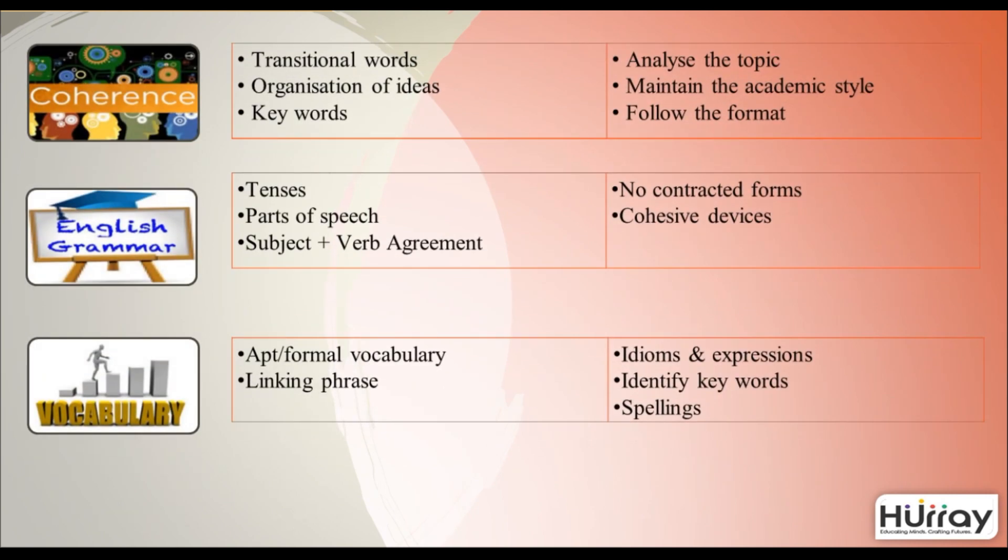There are three aspects to take care of while writing your letter: coherence, grammar, and vocabulary. Under coherence, look for transitional words and use them, organize your ideas, use keywords from the question, analyze the topic correctly, maintain the academic style, and follow the format and structure.